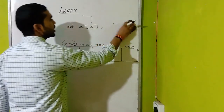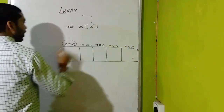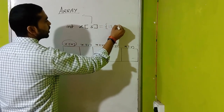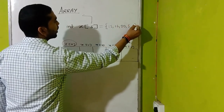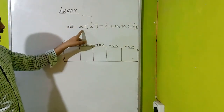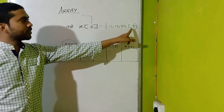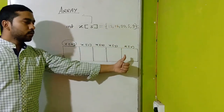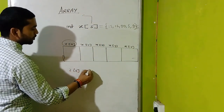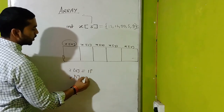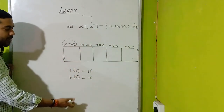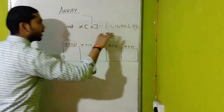Pehle dekhte hain initialization kaise karte hain. Jab aap array declare karte hain, wahan pe equal sign lagayega aur curly bracket ke andar values pass kar dijiye, jaise 15, 16, 20, 5, 9, aur last mein terminator. Is tarah se x[0] mein pehli value, x[1] mein doosri, x[2], x[3], aur x[4] mein is tarah se saari values apne aap assign ho jayengi. Aap yeh declaration alag-alag bhi kar sakte the — x[0]=15, x[1]=16 — lekin woh typing effort badhata hai.